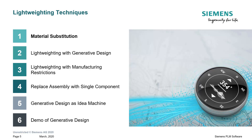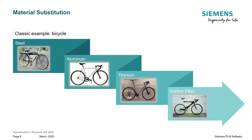Let's talk about material substitution. The bicycle is a classic example. When bicycles were first designed, they were made of steel. As time and material technology improved, we switched to aluminum, then titanium, and now many modern racing bikes are made from carbon fiber. In each iteration the bicycle became lighter and just as strong, resulting in less energy expended by the rider so they can maintain the same speed or go faster.